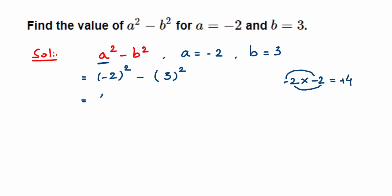So 4 minus 3 squared. 3 squared is 3 into 3 which is 9. So we got 4 minus 9. 4 minus 9 is 5, but 9 is greater with a negative sign, so we're going to put minus here. So the answer is minus 5.